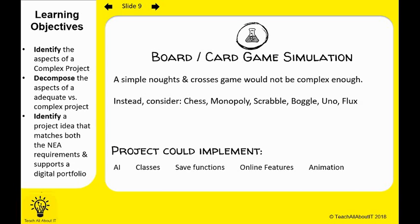Instead, you could consider a cut-down version of chess or Monopoly. This year the AQA simulation was actually a version of Scrabble — it was AQA with words. Boggle is a really useful one because with Boggle you can do pattern matching, which is another level of complexity.